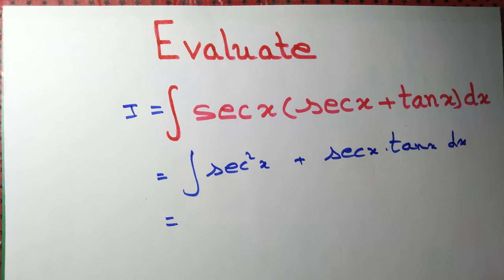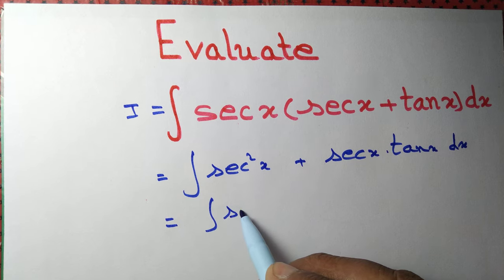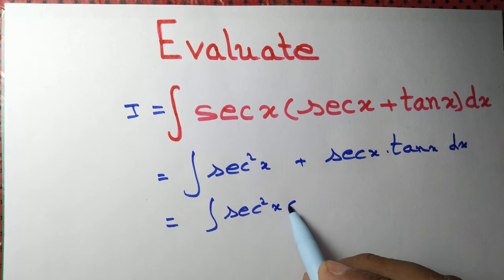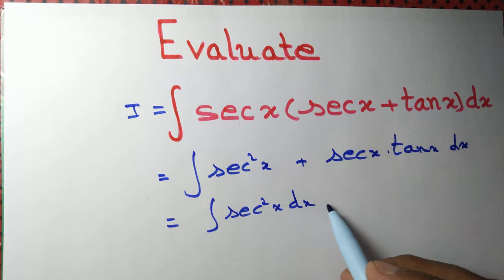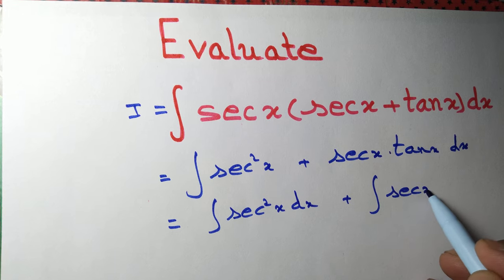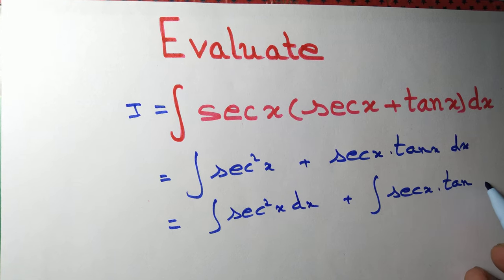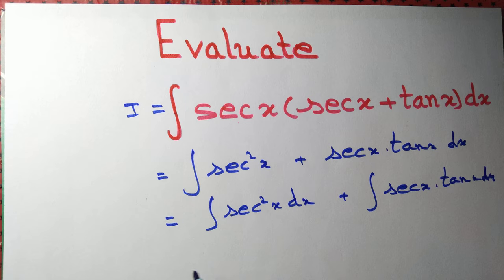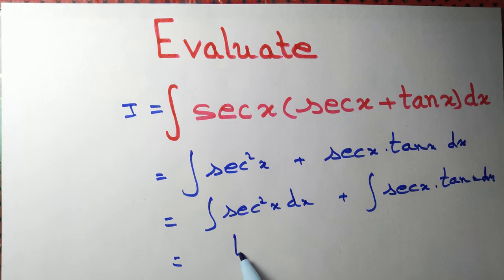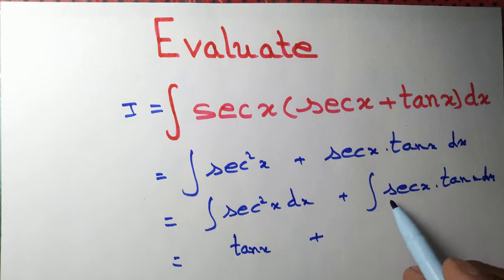Since the integral of a sum equals the sum of integrals, this can be written as the integral of sec²x dx plus the integral of sec x tan x dx. The integral of sec²x is simply tan x.